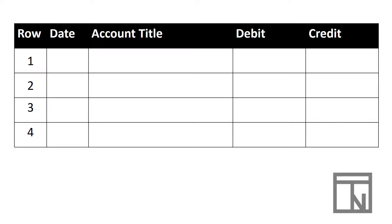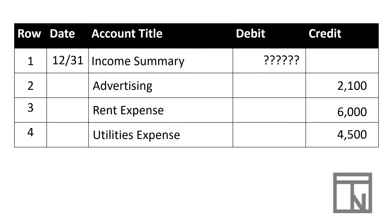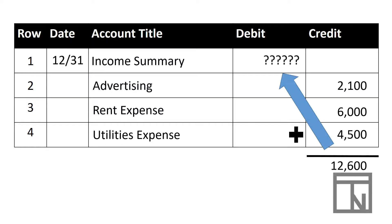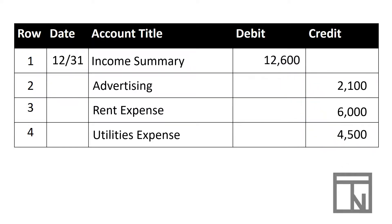On 12/31, we debit Income Summary, but first we need to know the total of our expenses. We enter each expense on its own credit line. When we're finished entering all of the expenses, these are totaled — in this case, our total comes to $12,600. That becomes the debit for the Income Summary account, so total credits equal total debits and the journal entry balances. So long as the debit to Income Summary matches the total of the credits to the expense accounts, the journal entry will be correct.